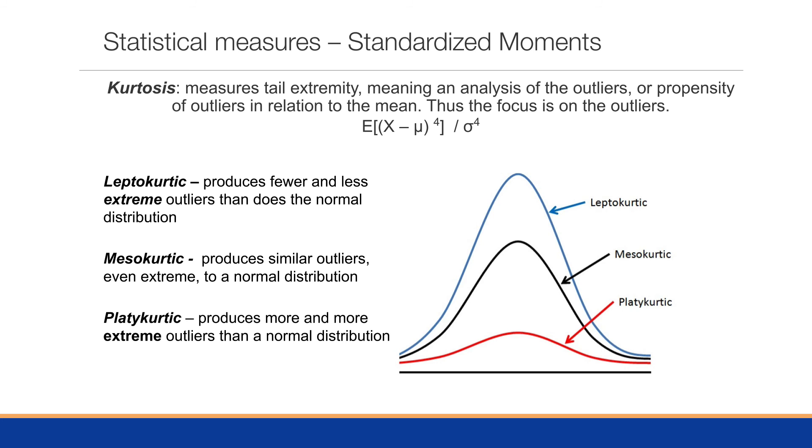We have three types of kurtosis. Leptokurtic, which produces fewer and less extreme outliers than the normal distribution. Mesokurtic, which produces similar outliers, even extreme, to a normal distribution. And platykurtic, which will produce more and more extreme outliers than a normal distribution.